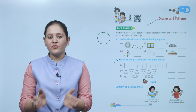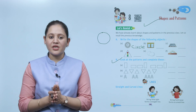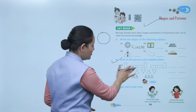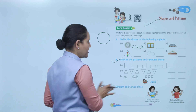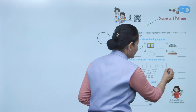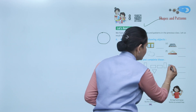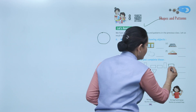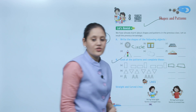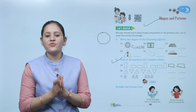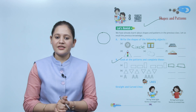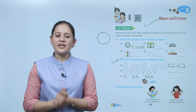What pattern is following here? First a standing rectangle, then two sleeping, then standing, two sleeping, one standing, then two sleeping rectangles like this. So first we will observe the pattern and accordingly we will fill the next lines.